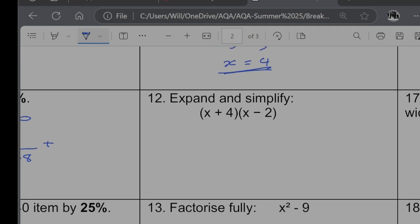Question 12. Expand and simplify. So I'm going to say that x times by x would give me x squared. x times by minus 2 would give me minus 2x. 4 times by x would give me plus 4x. And then 4 times minus 2 would give me minus 8. That's the expand part. Now simplify. These middle two terms can be collected. So that's going to become x squared plus 2x minus 8. So that's my simplified version.